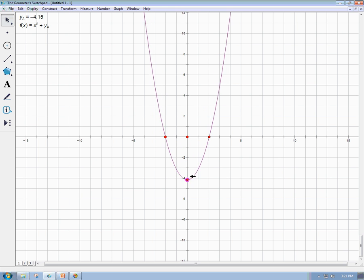But I'm dragging it up and down, and what you can see is the intersection points with the x-axis are getting closer and closer to each other. And as I get right there, they coalesce into one point.